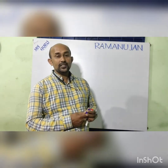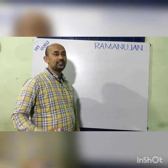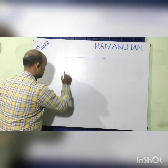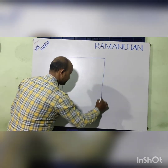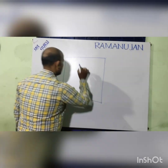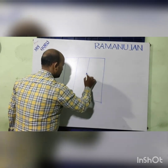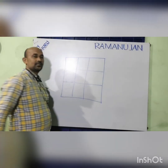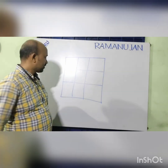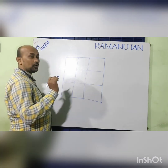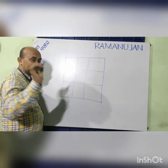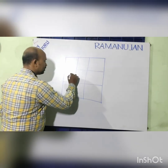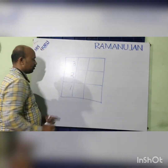So to write the table of 3, let us make a 3 by 3 square. We have to put the numbers from 1, 2, 3 like this, in this order — 1, 2, 3 — from bottom to top.